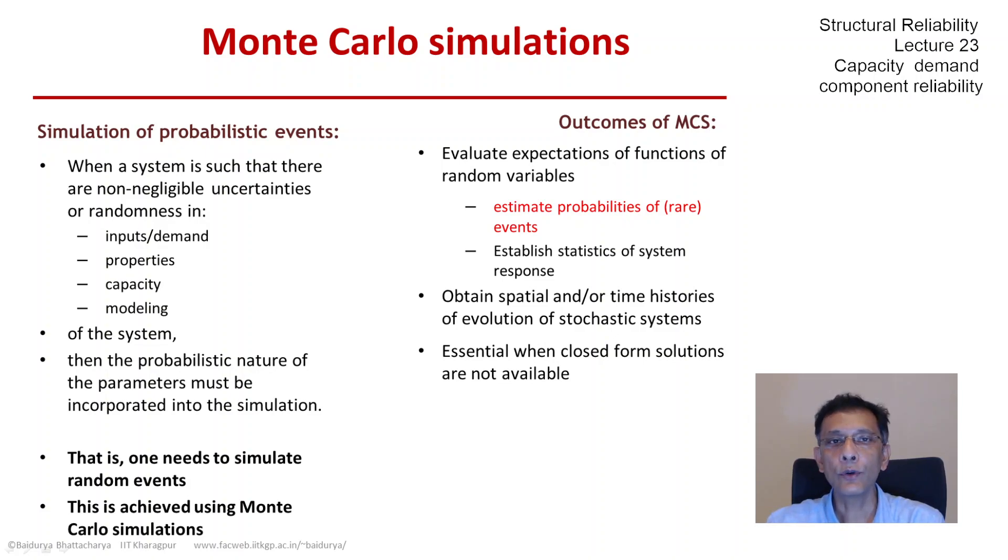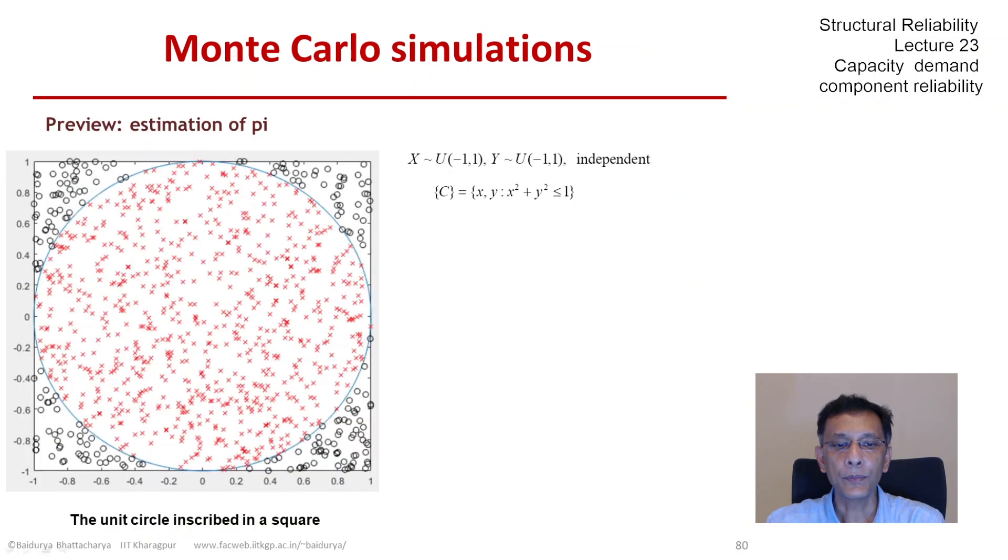Now we solved one example problem during that first introduction, which was estimation of pi. And we showed that pi can be estimated using a probability. It was not a rare probability of course, but it can be done very elegantly by simulating random points in the unit circle inscribed in a square of size 2 by 2.